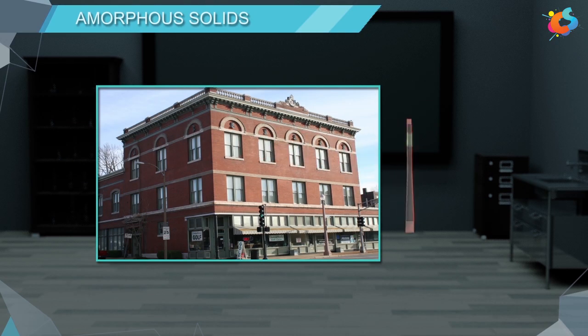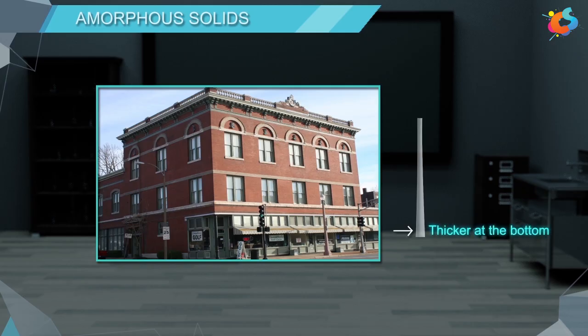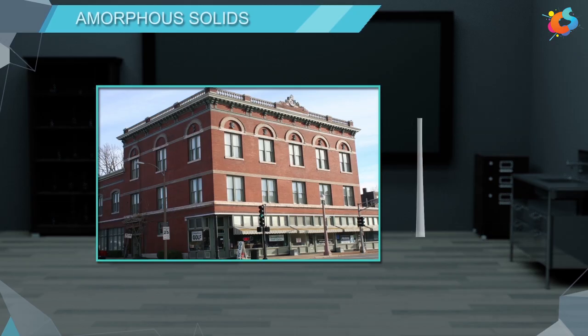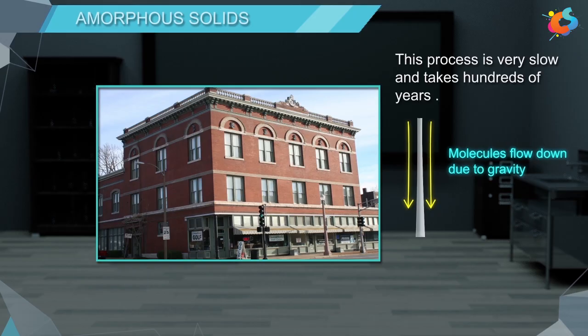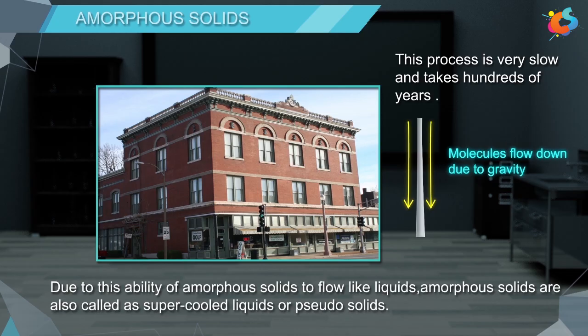If we notice carefully the glass windows of very old historical buildings, we will observe that these glass panes are thicker at the bottom compared to the top. This is because, as time progressed, some of the molecules on the top of the glass flowed down due to gravity and accumulated at the bottom, making it thicker. This process is very slow and takes hundreds of years. Due to this ability of amorphous solids to flow like liquids, amorphous solids are also called supercooled liquids or pseudosolids.